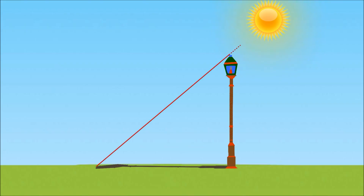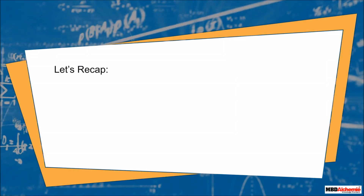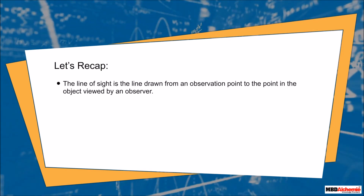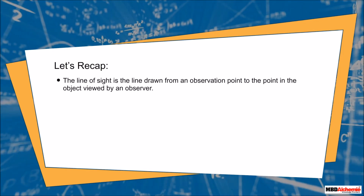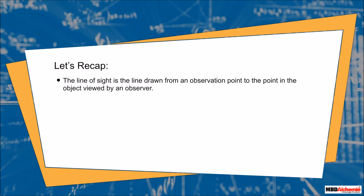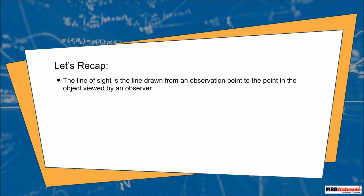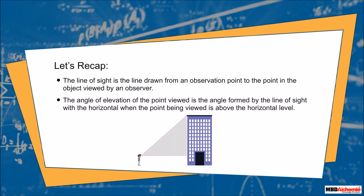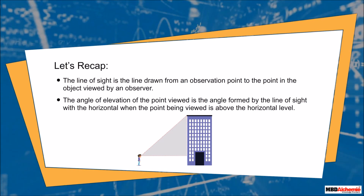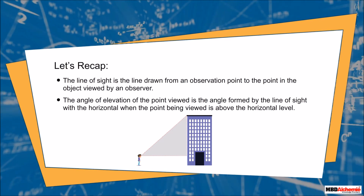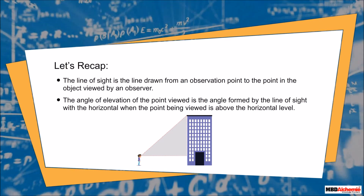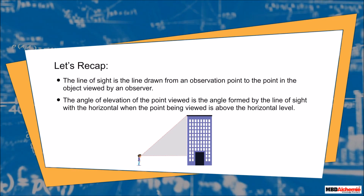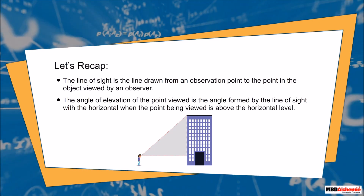The top of the pole makes an angle of elevation at the tip of the shadow of the pole. Let us recap. The line of sight is the line drawn from an observation point to the point in the object viewed by an observer. The angle of elevation of the point viewed is the angle formed by the line of sight with the horizontal when the point being viewed is above the horizontal level.